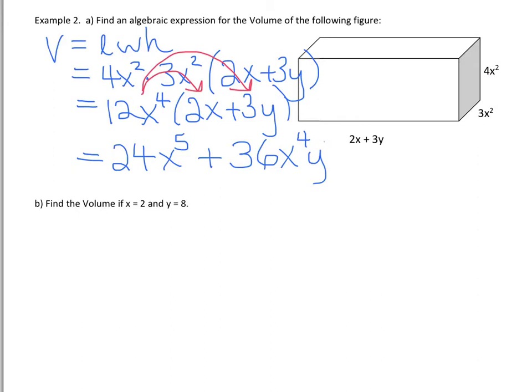And the reason we would do that is so that then we could answer question B, which says find the volume if x equals 2 and y equals 8. It's much easier to take these values and substitute them into the simplified expression than it is to substitute into the original expression above.